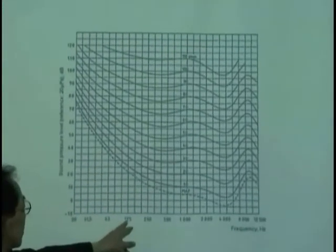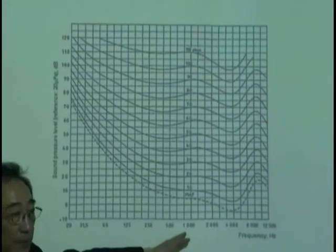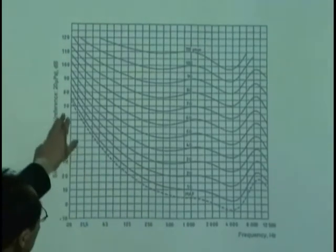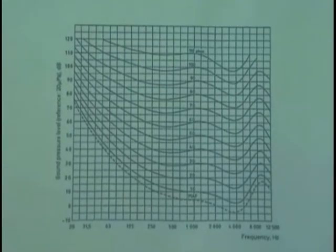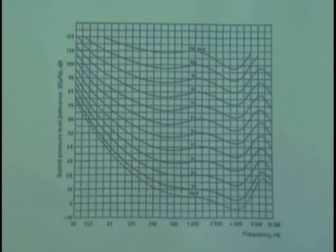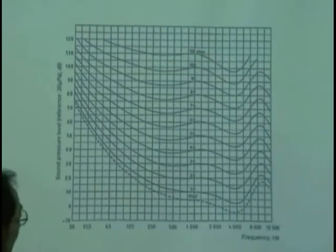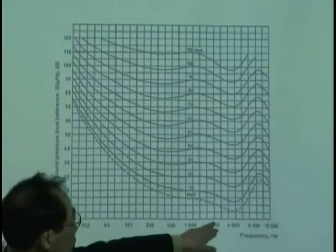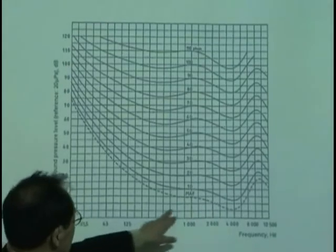63, 125, 125, 500, 1 kilohertz. This is the threshold of hearing. So, when you look at the graph at 2 kilohertz, that is zero,